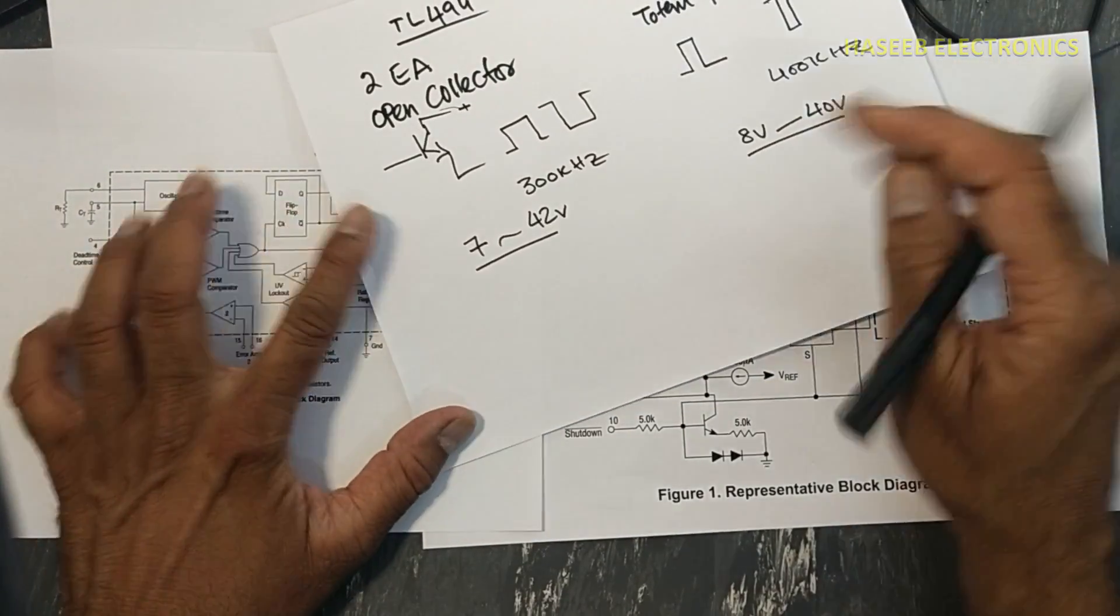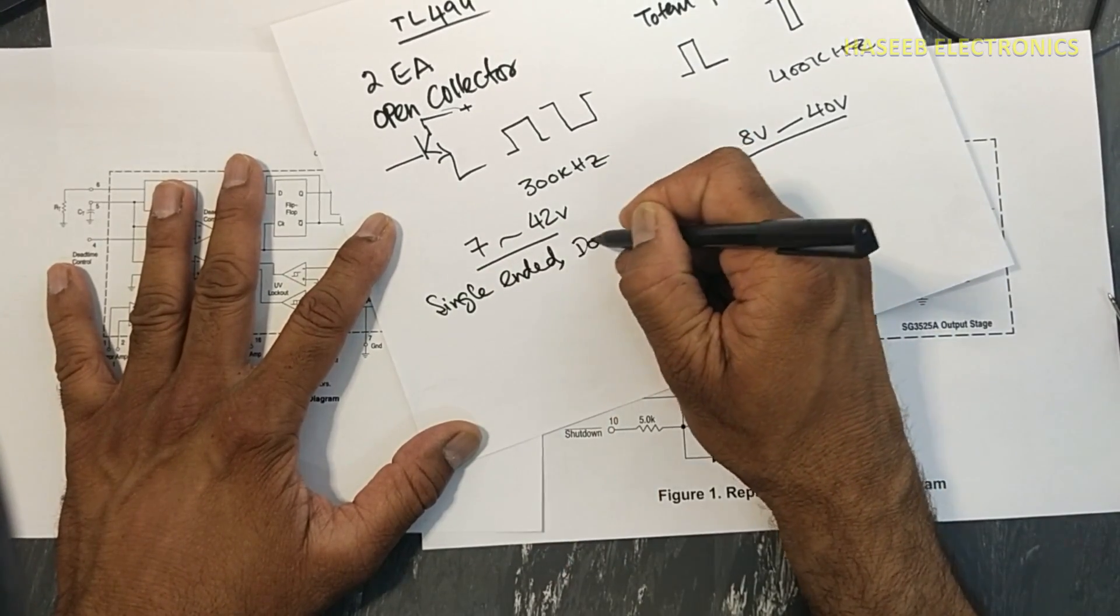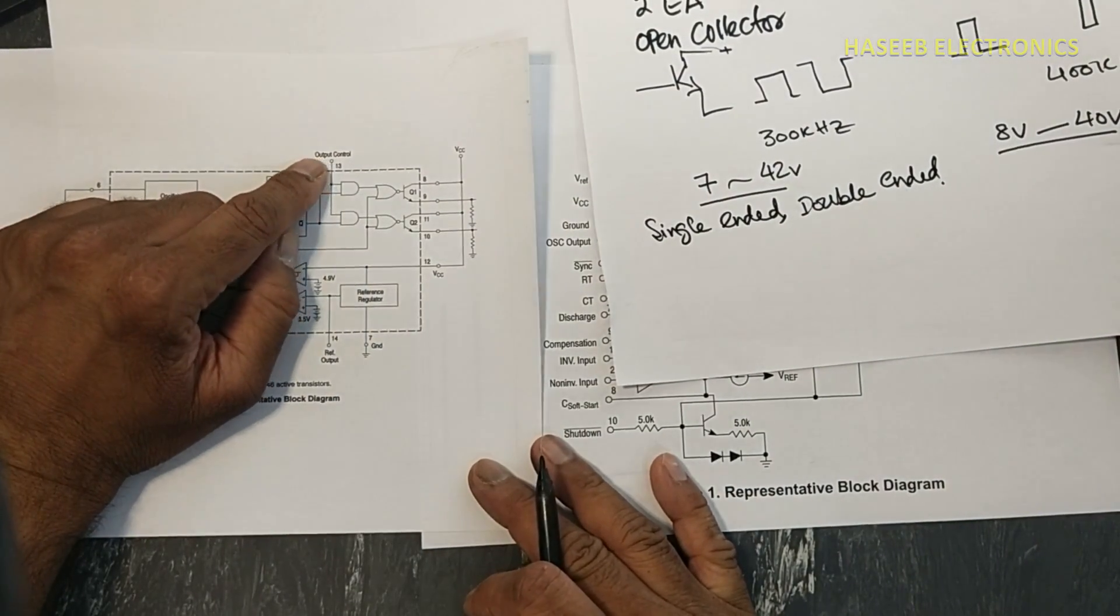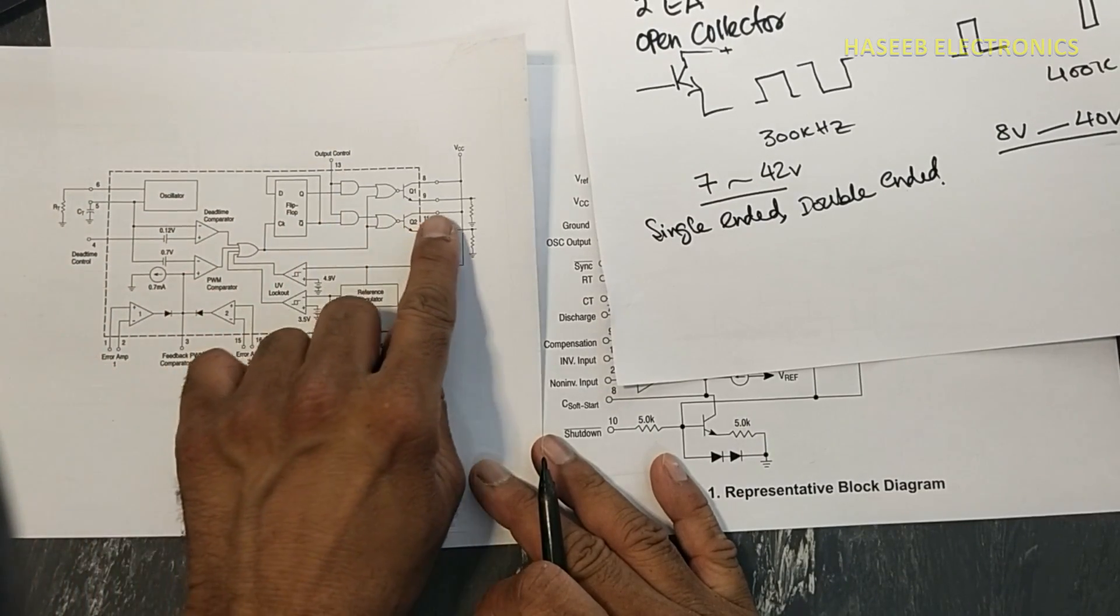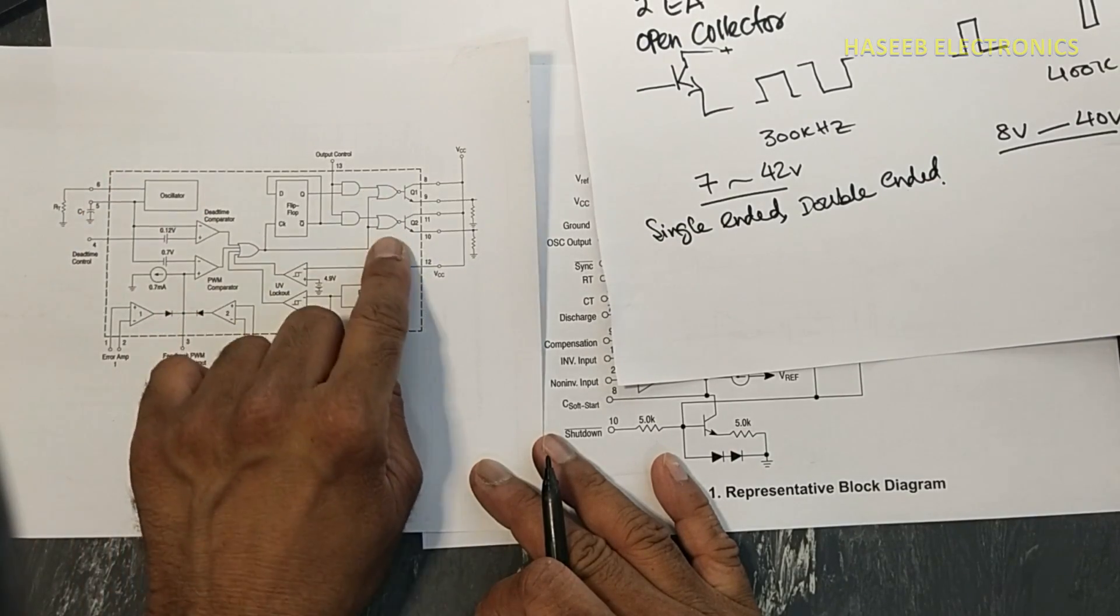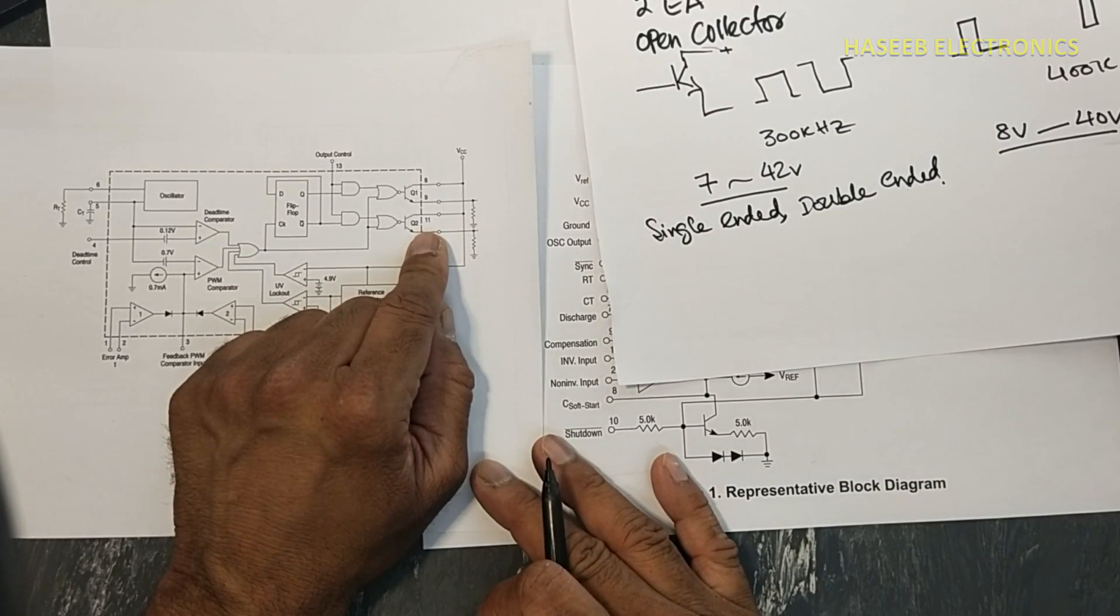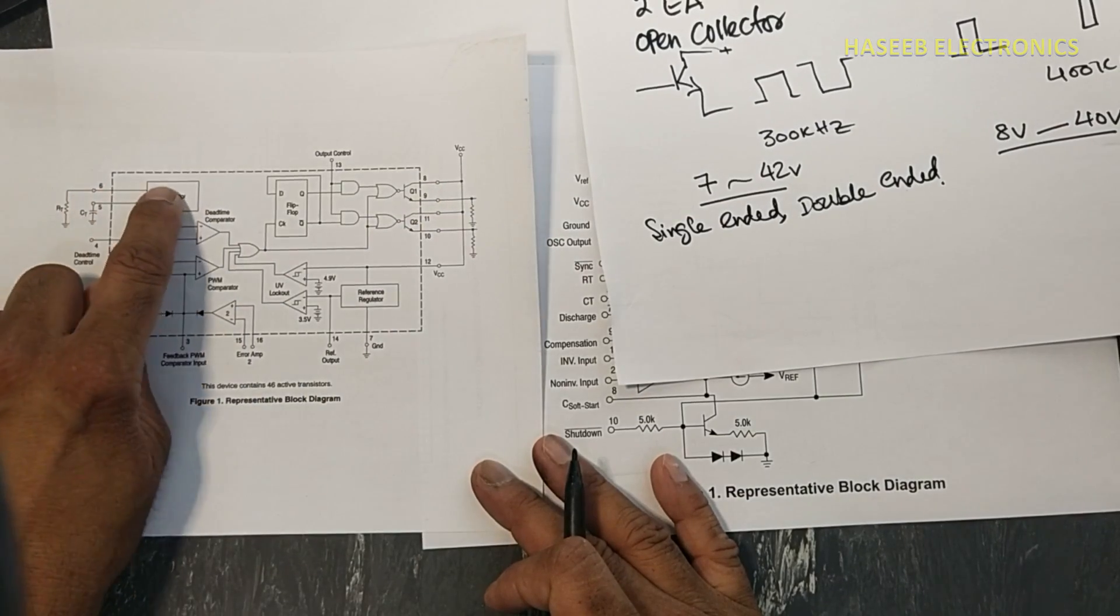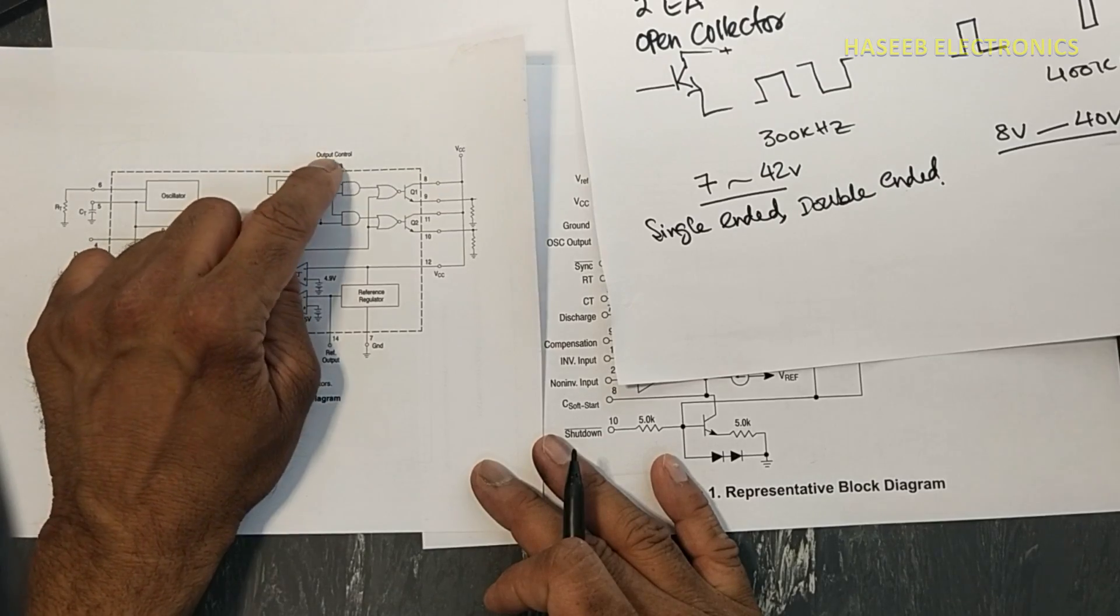Then facility in this IC, that it can be used in both modes: single ended, double ended. Single ended, when the output control, control pin number 13, is connected to ground. At that time its both transistors will work as one transistor, so both circuits will switch together. So at that time it will work as one switch. At that time its output frequency will be same as the oscillator frequency.